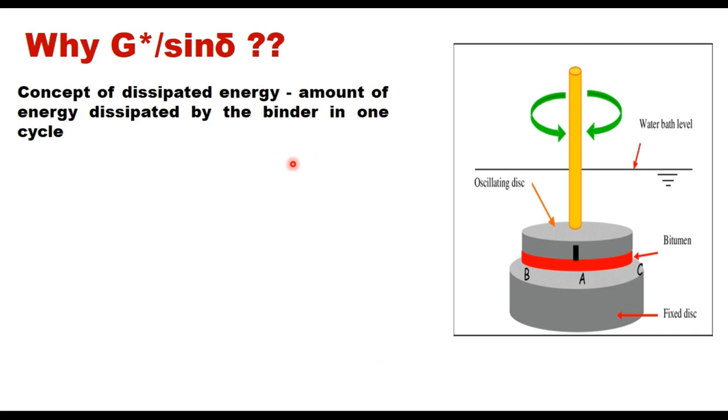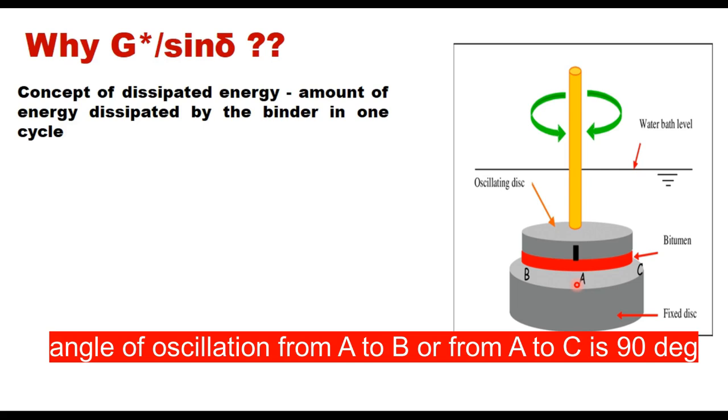It explains the rutting susceptibility of asphalt binders based on the concept of dissipated energy. Sinusoidal stress is applied to a sample of binder which is sandwiched between two plates: one is fixed and another rotates or oscillates at a constant speed. One loading cycle takes place when the upper plate moves from A to B and then from B to A and then goes from A to C and then comes back to A. DSR records the maximum stress and strain in the sample.